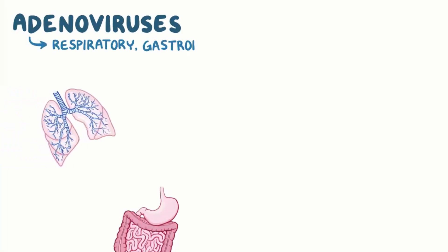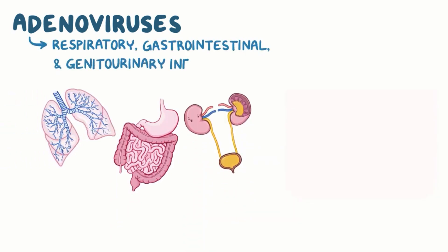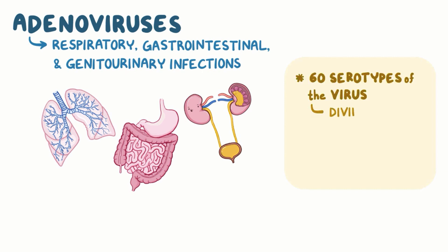Adenoviruses are a group of viruses that cause respiratory, gastrointestinal, and genitourinary infections. There are about 60 serotypes of the virus, divided into 7 subgroups from A to G.